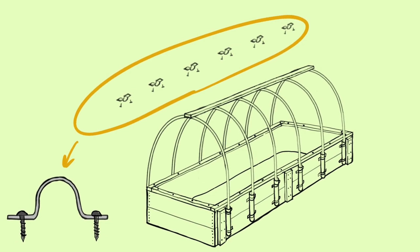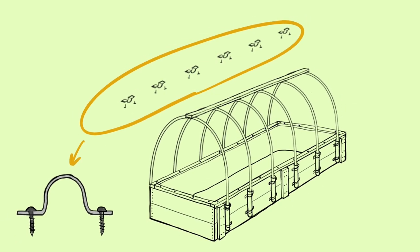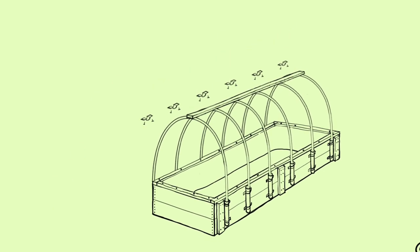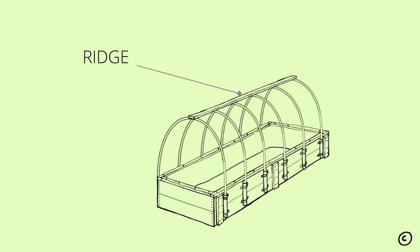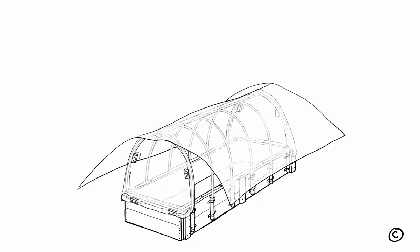These metal brackets secure the arches tightly on the 2x4 ridge, like ribs to a backbone. This ridge is the only area where the main piece of poly is permanently attached, so it needs to stay put.